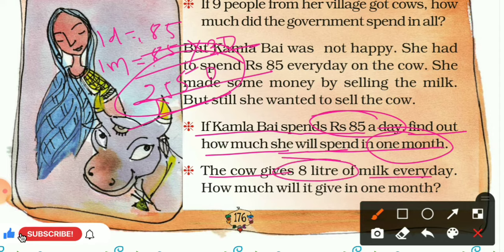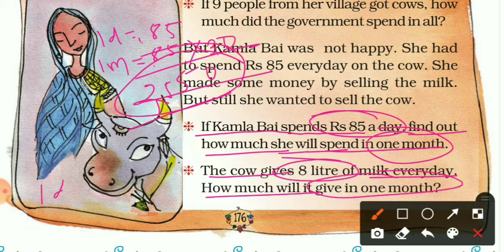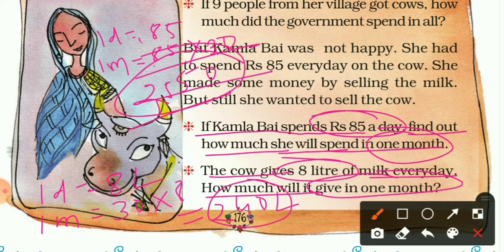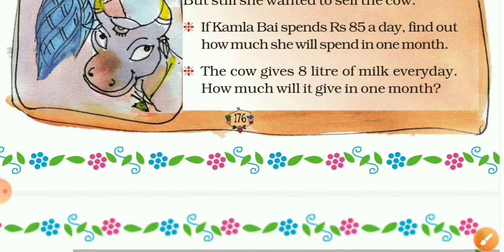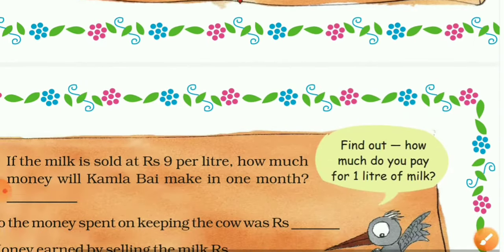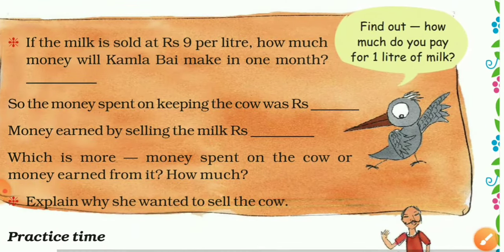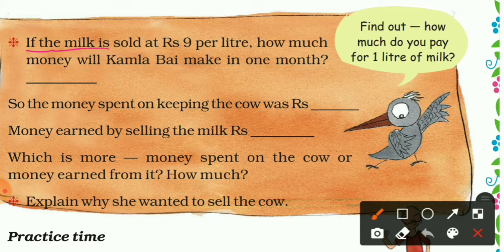The cow gives 8 liters of milk every day. How much will it give in one month? One month means 30 days, so we calculate 30 × 8 = 240. The cow gives two hundred forty liters of milk in one month.